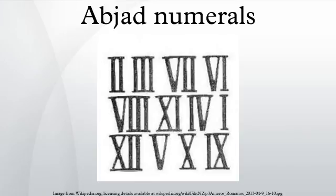The abjad numerals are a decimal numeral system in which the 28 letters of the Arabic alphabet are assigned numerical values. They have been used in the Arabic-speaking world since before the 8th century Arabic numerals. In modern Arabic, the word 'abjadiyya' means alphabet in general.